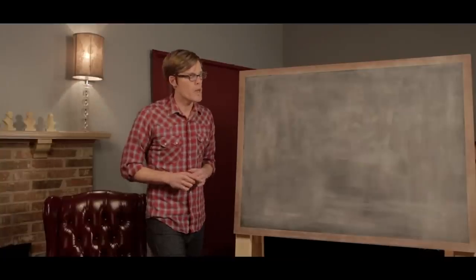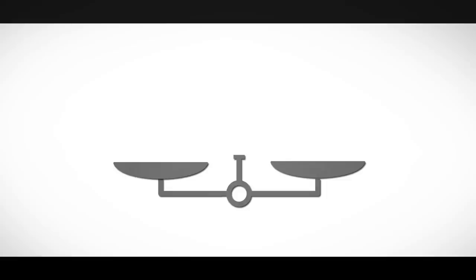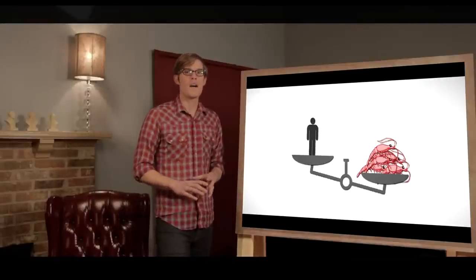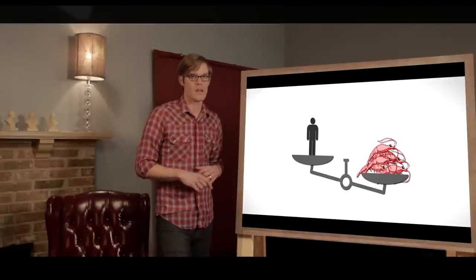So what do we see if we start weighing different species? All 7 billion humans on Earth weigh in at a hefty 287 million tons. But just one species of krill, which is that tiny crustacean that's eaten by large whales, weighs a total of 500 million tons on the scale together.